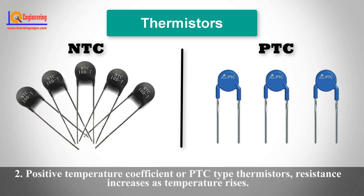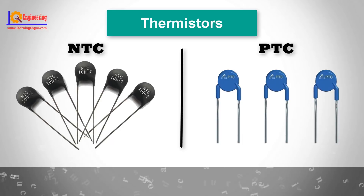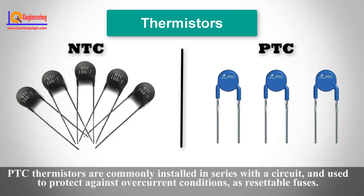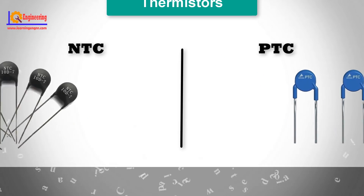The second type is Positive Temperature Coefficient, or PTC-type thermistors, where resistance increases as temperature rises. PTC thermistors are commonly installed in series with a circuit and used to protect against overcurrent conditions as resettable fuses.